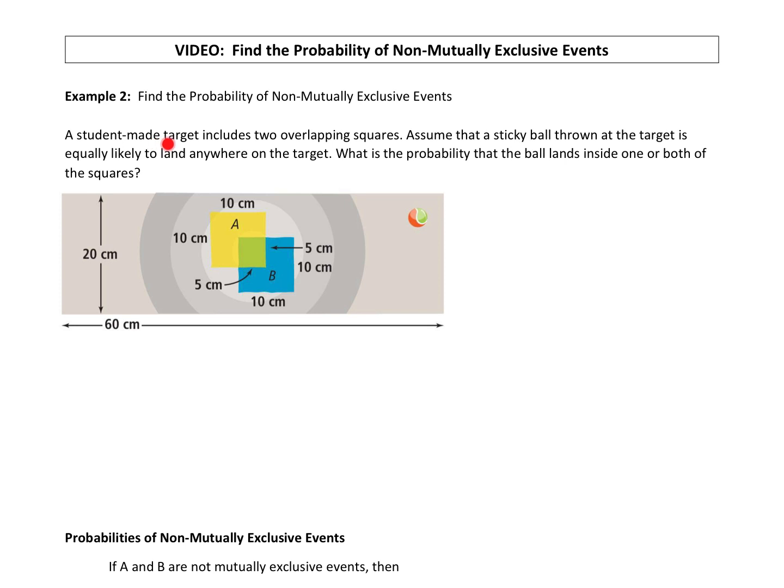In this example, a student-made target includes two overlapping squares. Looking at the picture, I know you're in black and white so it might be hard to see. You can see it's a yellow square - that's one of the squares. And then the other square is the blue one. Those are the two overlapping squares and they overlap here in the middle.